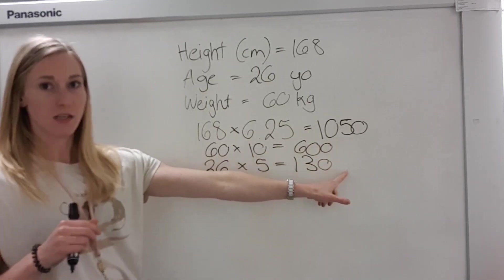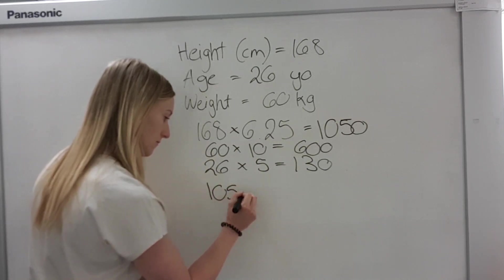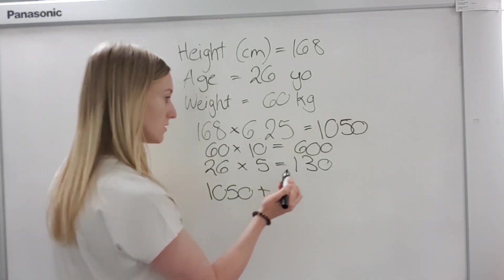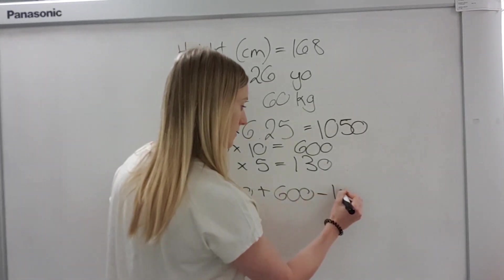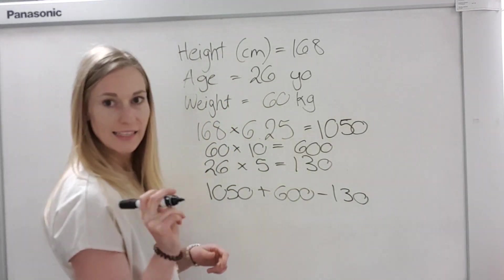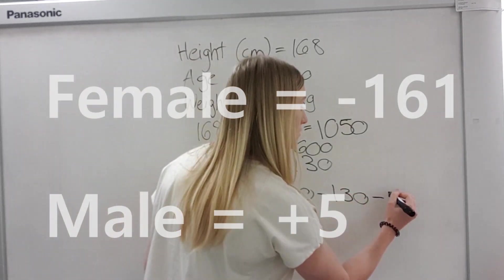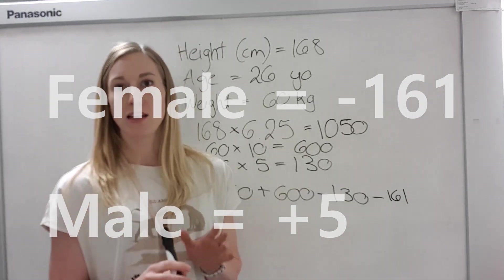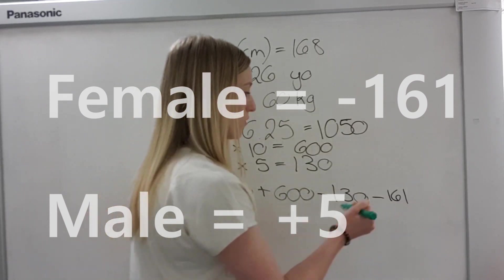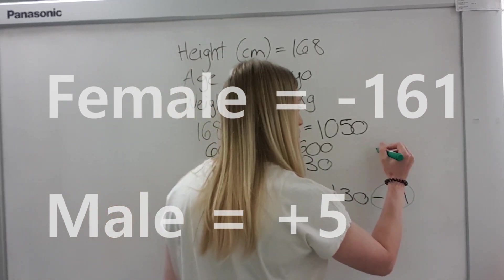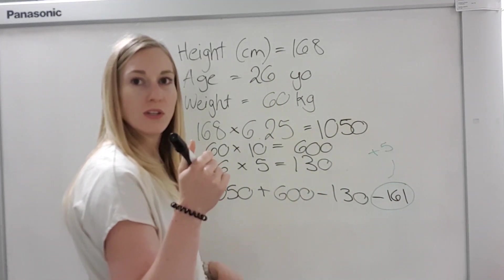Okay, now we'll need all of these numbers. So now we're going to use these numbers. We're going to do 1050 plus 600 minus 130. And then that's when it gets a little bit different if you're a female. So for myself, I'll have to do minus 161. If you are a man, however, you would do plus 5 instead of 161. So this number would change if you are a man and it would change to plus 5. So that is a total of 1359.